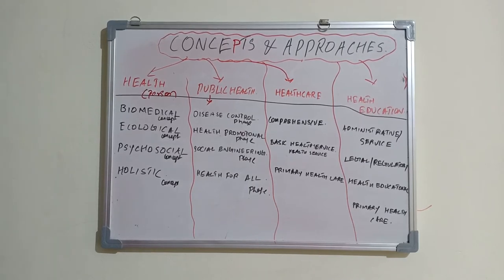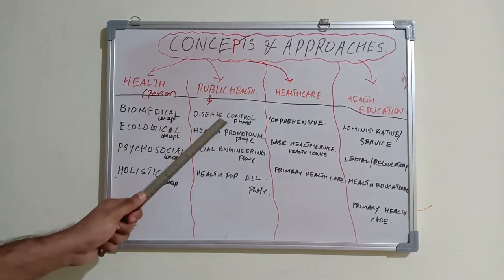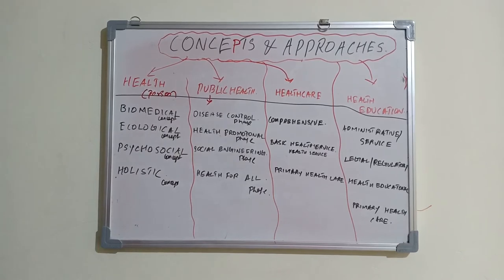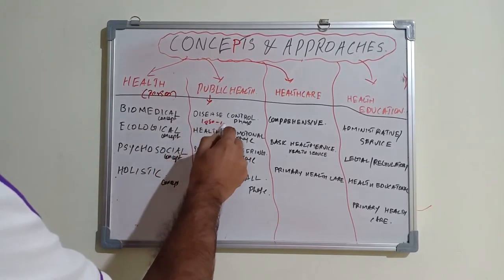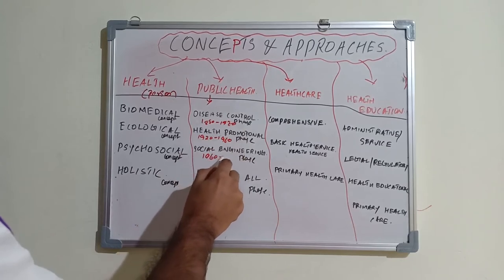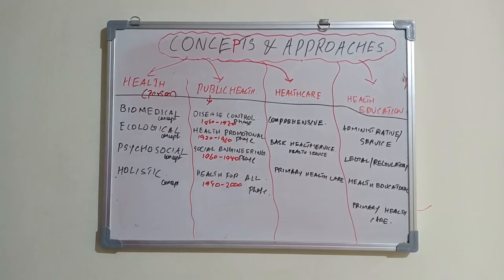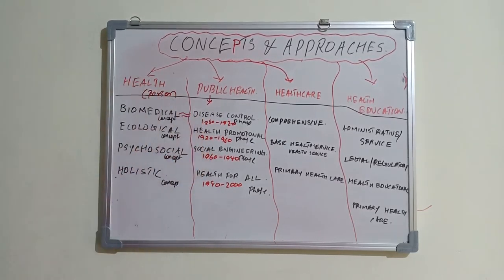This is about how we perceive a person's health and when we can say a person is healthy. The biomedical concept is the earliest and holistic is the latest. Moving on to public health: the control phase started around 1880–1920, health promotional phase was 1920–1960, social engineering phase was 1960–1980, and health for all phase was 1980–2000.